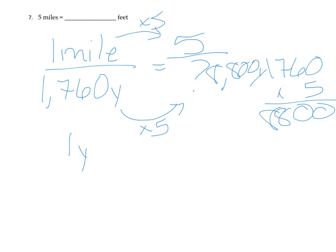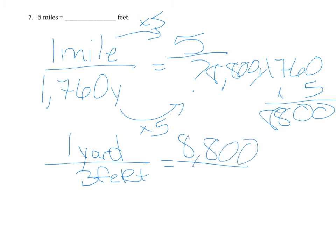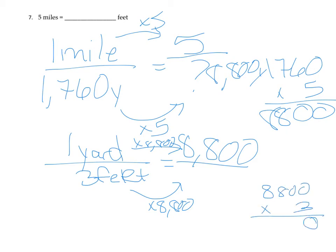We know 1 yard has 3 feet, and we have 8,800 yards, so we also multiply the feet by 8,800. Working it out: 8 times 3 is 24, carry the 2, that gives us 26. So the answer is 26,400 feet.